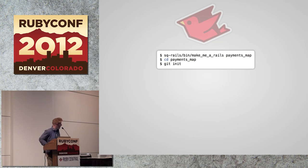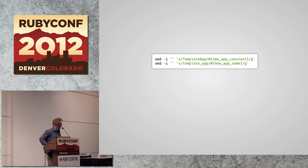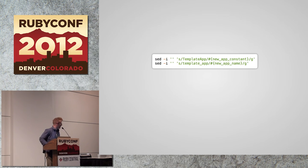What does the script do? Search and replace — that's all. We build a template app, search for a template app constant, and replace it with our new app constant. We do that twice, and that's it. So you can build this too: just make a new Rails app, get it deployed, and save that off as a good starting point for all your services.